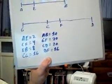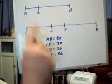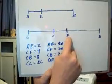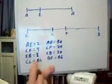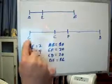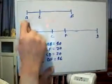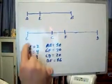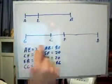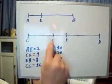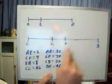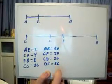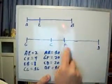The first thing you might ask is where are all these things. Well, here's AE, CF is right here, EB is right here, CG is right here, AB is this entire length, GF is this entire length, CD is this entire length, and DF is this length right here.